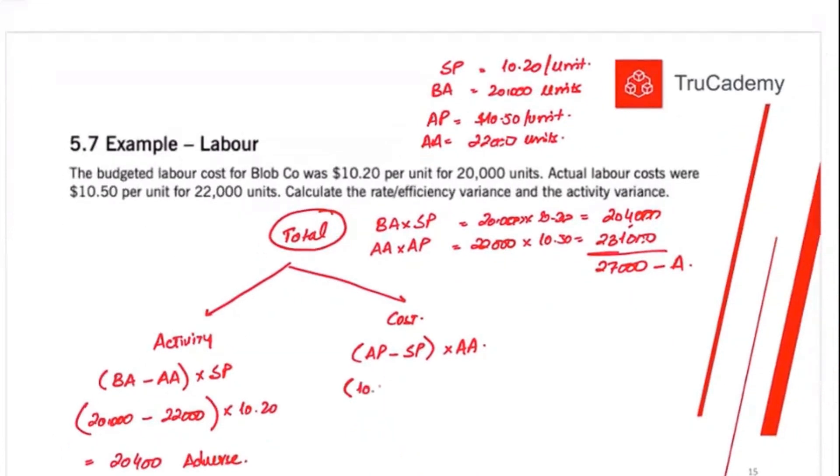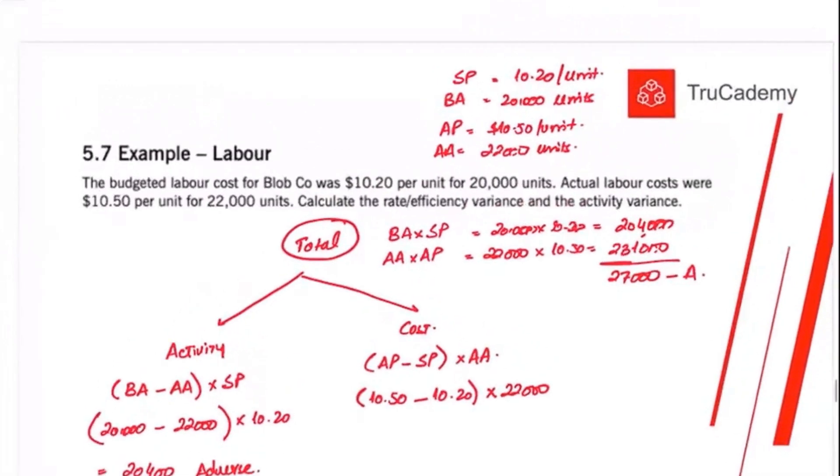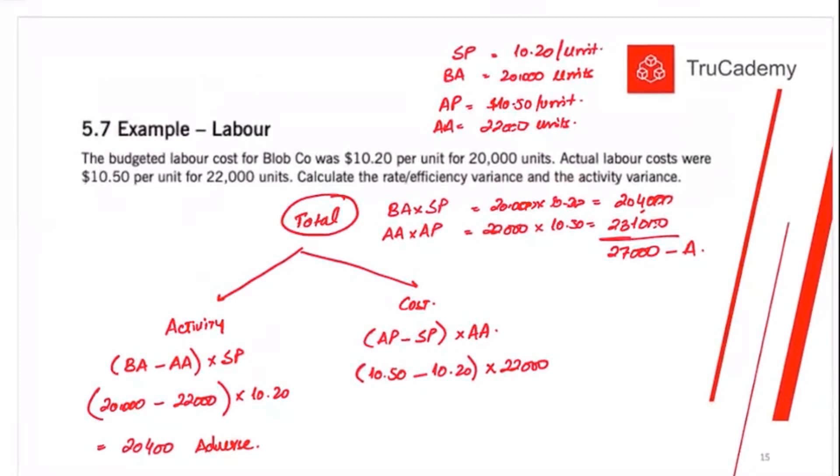So actual cost that we paid to the labor was 10.50. And the budget was 10.20. We clearly paid more to the labor and actual activity is 22,000. So how much will be the difference or variance? 10.50 minus 10.20 into 22,000. So this will be 6,600. This is favorable or adverse? This is adverse.